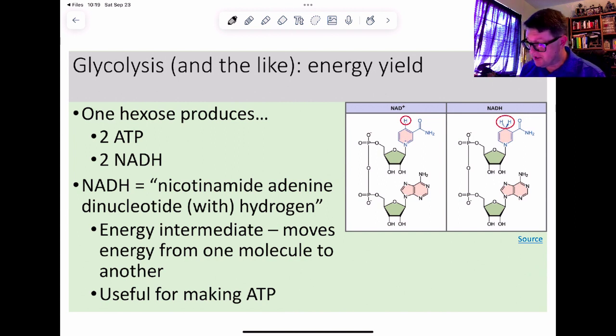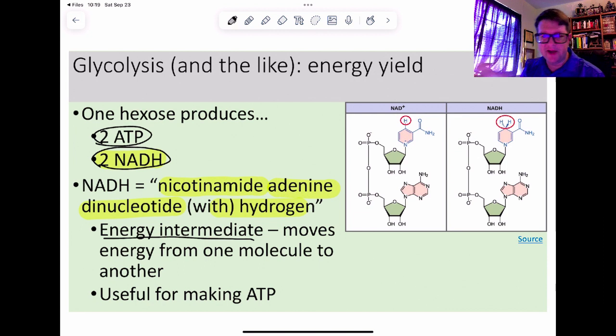What we will produce as a result will be two ATPs and two weird things we haven't seen yet called NADHs. NADH, if you'd like the full name, stands for nicotinamide adenine dinucleotide. The H is telling me something about its chemistry—it's a type of chemistry referred to as redox chemistry. It is what we call an energy intermediate, meaning it's just there to shuffle energy back and forth. It's not a storage device; it's meant to move energy. We use NADH to make ATP.